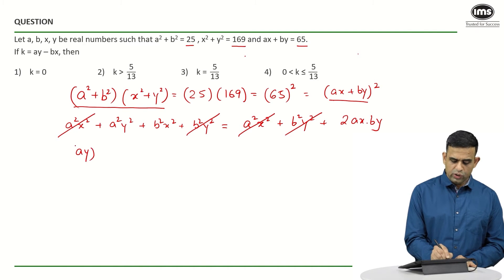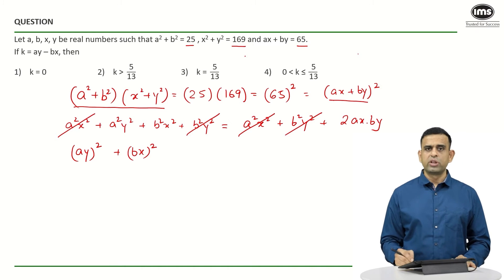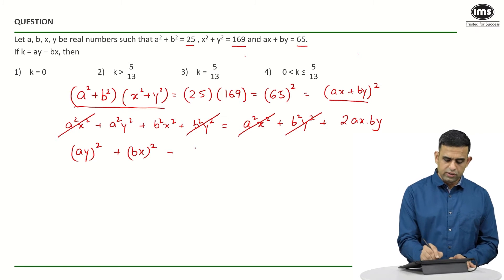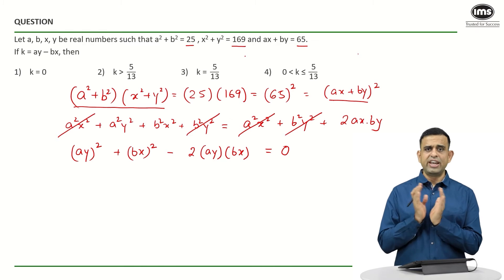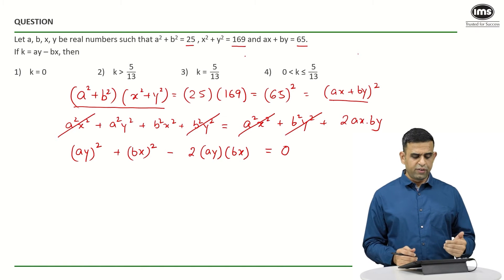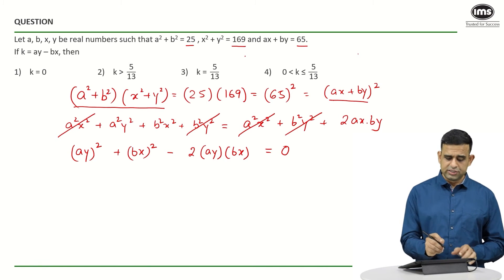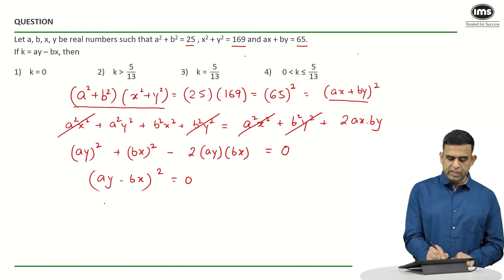After cancellation, we get a²y² + b²x² − 2·ay·bx = 0. Note that we can rewrite ax·by as ay·bx. This expression a²y² + b²x² − 2·ay·bx can be written as (ay − bx)² = 0.